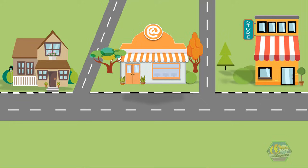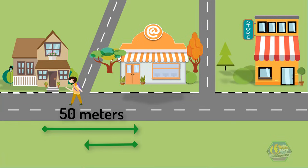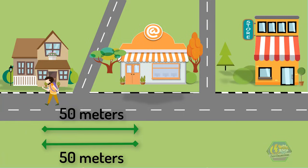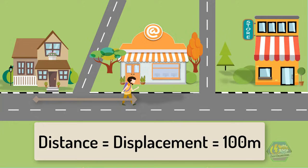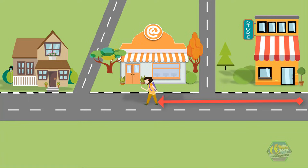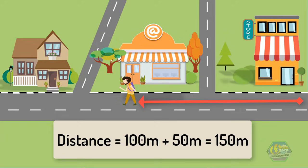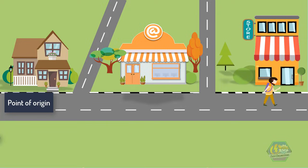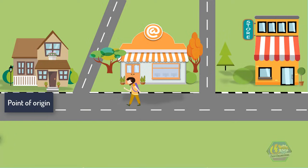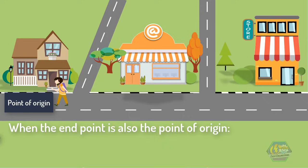Going back to the example, we saw how Suzy traveled from her house to the internet cafe to the convenience store and going back to her house. We previously looked at the distance values, but now we will look at the displacement values. As Suzy went to the convenience store, the distance and displacement are of the same value. But when Suzy comes back and reaches the internet cafe, her distance is 150 meters. But her displacement, defined as the shortest distance from the point of origin — her house — to her final position, the internet cafe, is just 50 meters. And when she reaches her house, which is her point of origin, the value of displacement becomes zero.